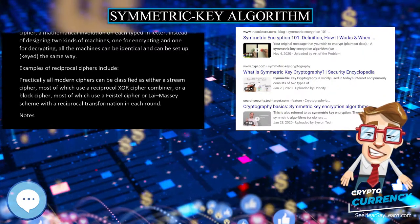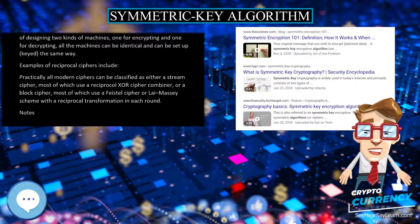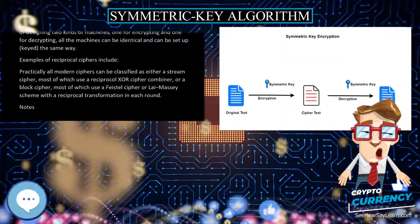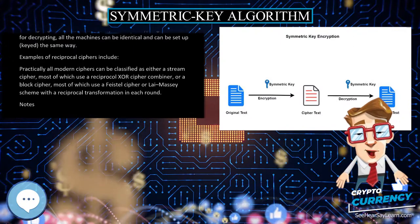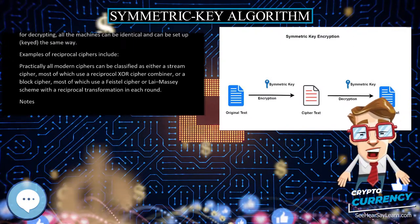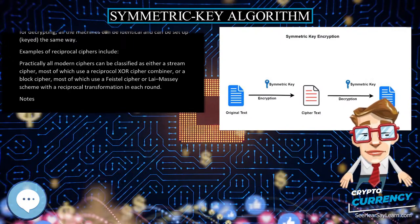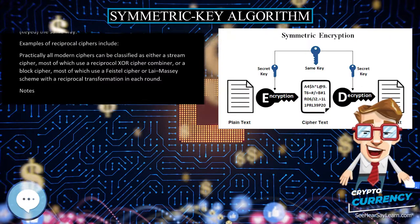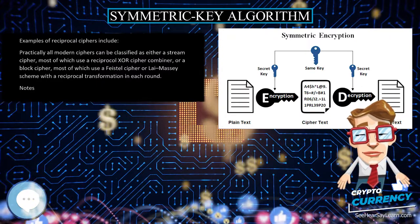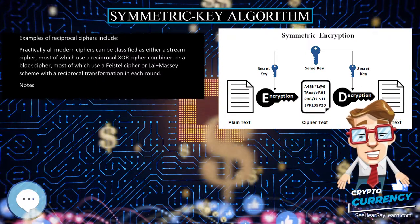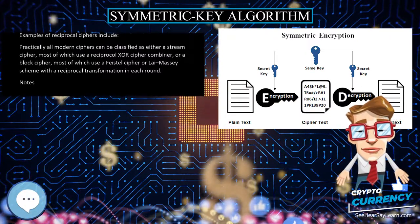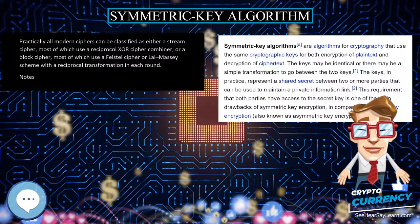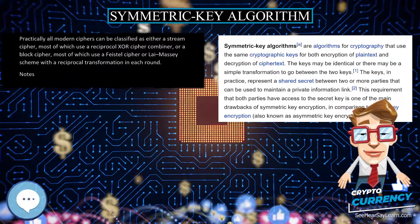Practically all modern ciphers can be classified as either a stream cipher, most of which use a reciprocal XOR cipher combiner, or a block cipher, most of which use a Feistel cipher or a Massey scheme with a reciprocal transformation in each round.